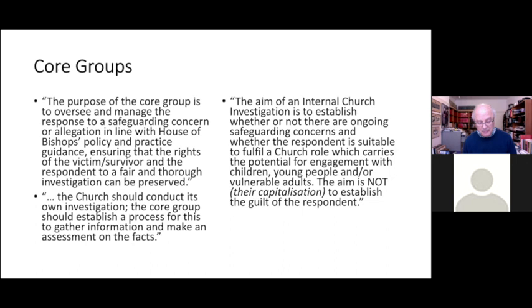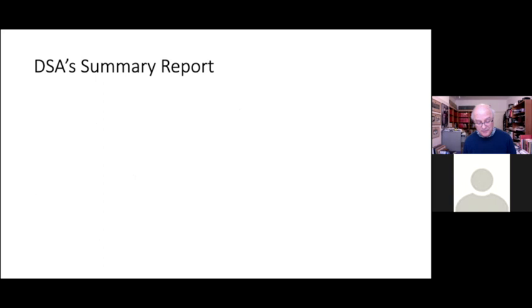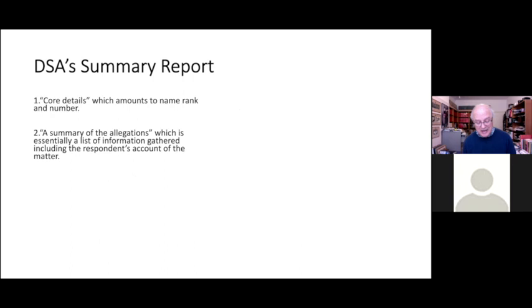After that investigation has taken place, the diocesan safeguarding advisor prepares what is called a summary report. This appears to be a key document. It contains three things: the core details (name, rank and number), a summary of the allegations (a list of information gathered), and an assessment of the findings.